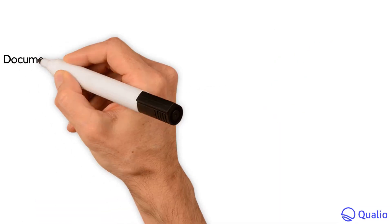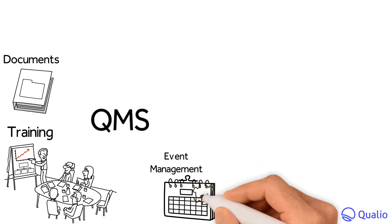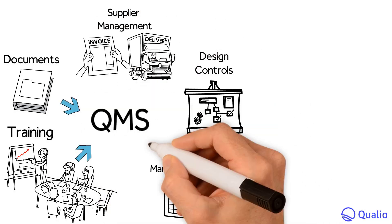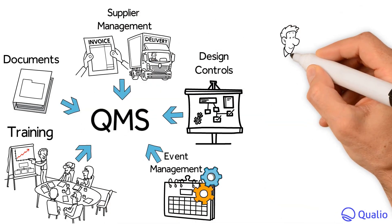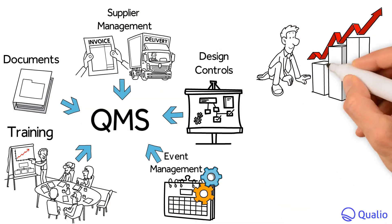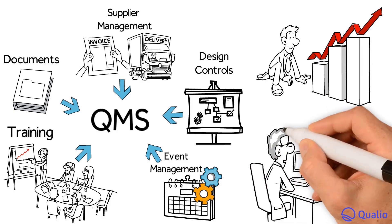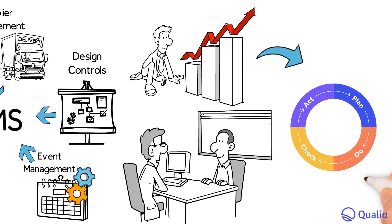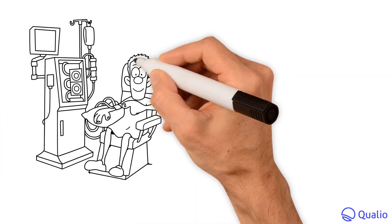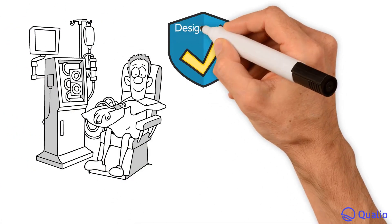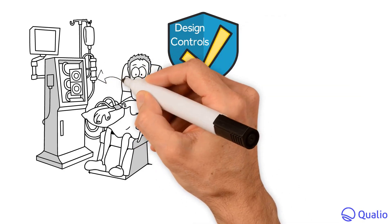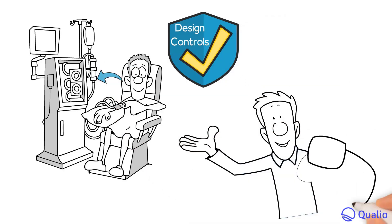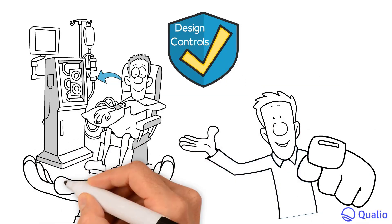Most importantly, you'll need to get a functional medical device quality management system in place. That means structuring your business in a way that consistently provides medical devices that meet patient needs by following a process approach. You'll need to consider the potential patient health and safety risks connected to your device and its design, and show how you've proactively treated and mitigated them.